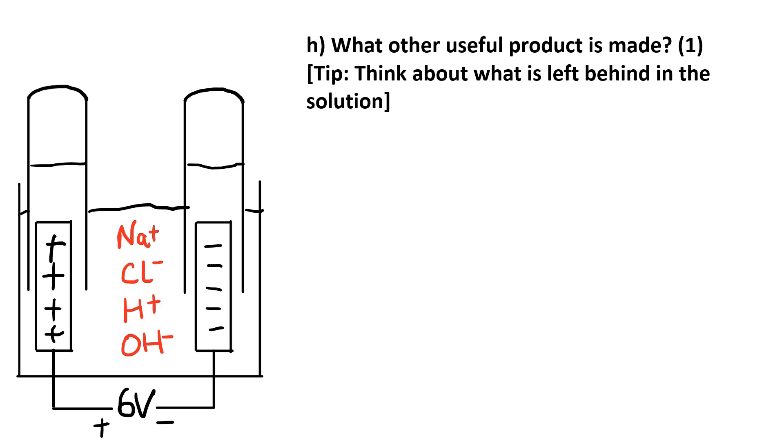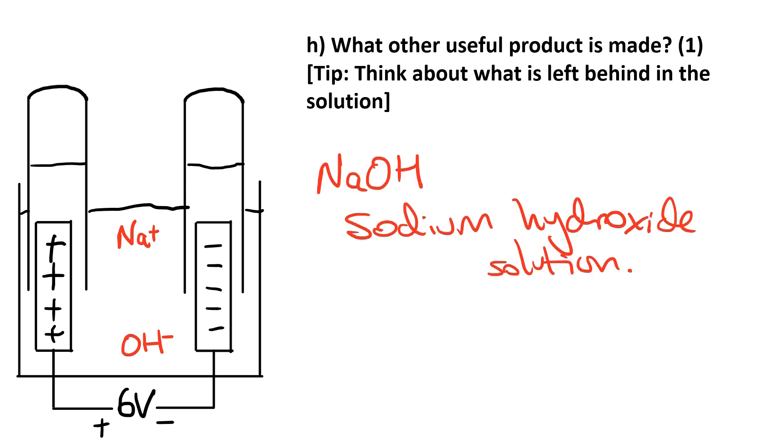Question H: what other useful product is made? The tip is think about what is left behind in the solution. We've started off with those four ions—the chloride ions go off and turn into chlorine gas, the hydrogen ions turn into hydrogen gas—and that leaves behind NaOH, which is sodium hydroxide solution. So as well as making chlorine and hydrogen, we also make sodium hydroxide solution.